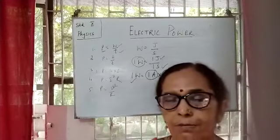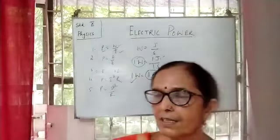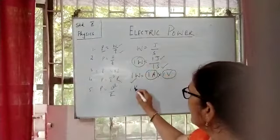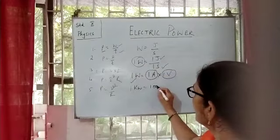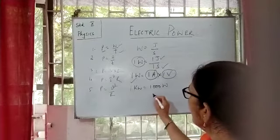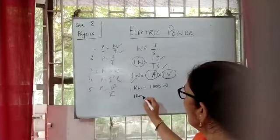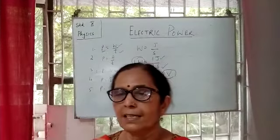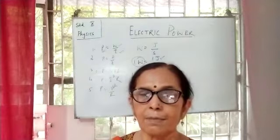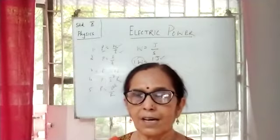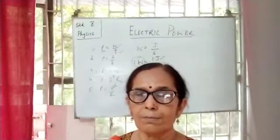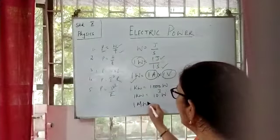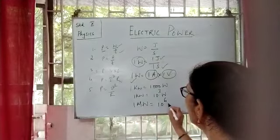The bigger unit of power is kilowatt. Kilo means thousand, so 1 kilowatt is equal to 1000 watt, which can also be written as 10 to the power 3 watt. An even bigger unit of power is megawatt, where 1 megawatt is equal to 10 to the power 6 watt.